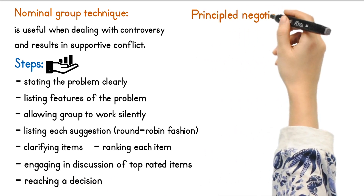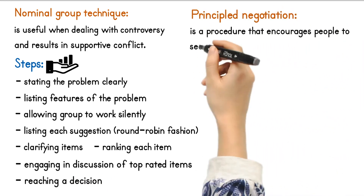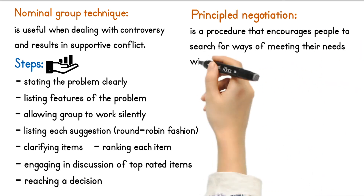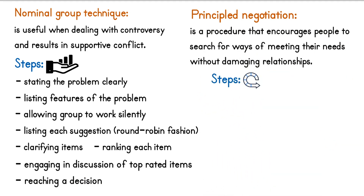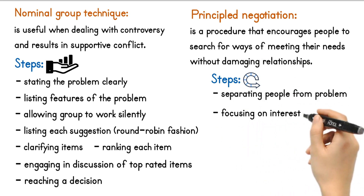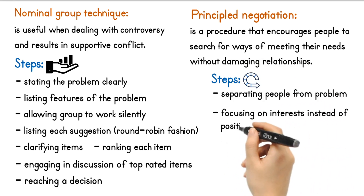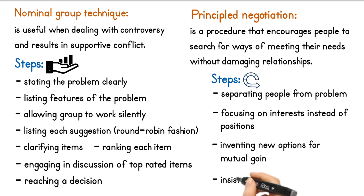Principled negotiation is a procedure that encourages people to search for ways of meeting their needs without damaging relationships. The steps include separating the people from the problem, focusing on interests instead of positions, inventing new options for mutual gain, and insisting on using objective criteria. By using these techniques and approaches to conflict management, groups can effectively navigate and resolve conflicts in a productive and positive manner.